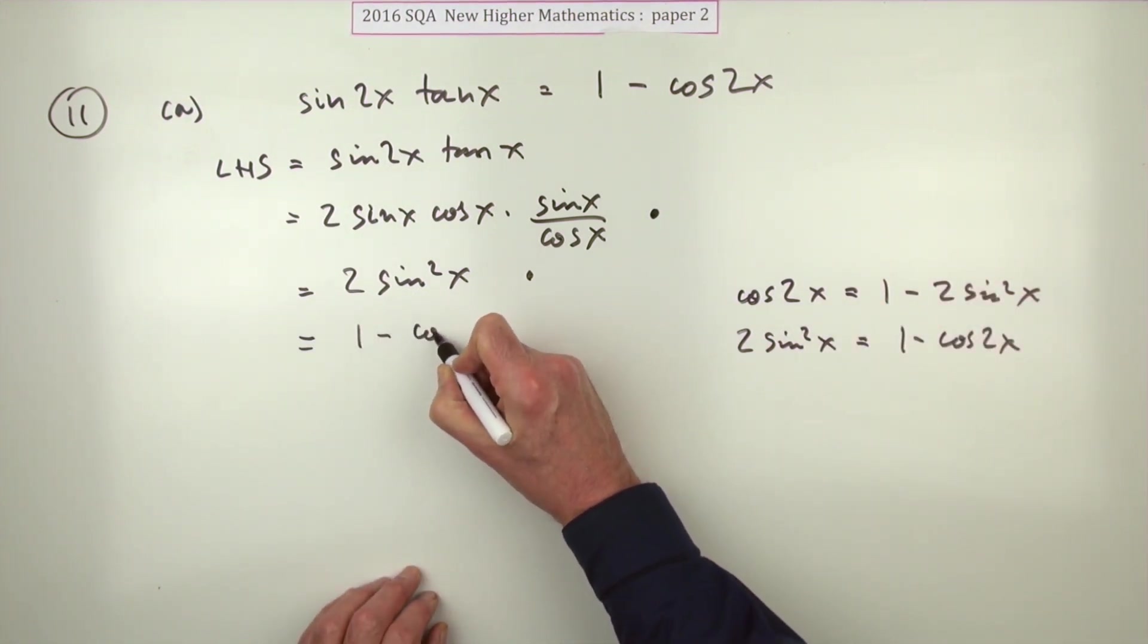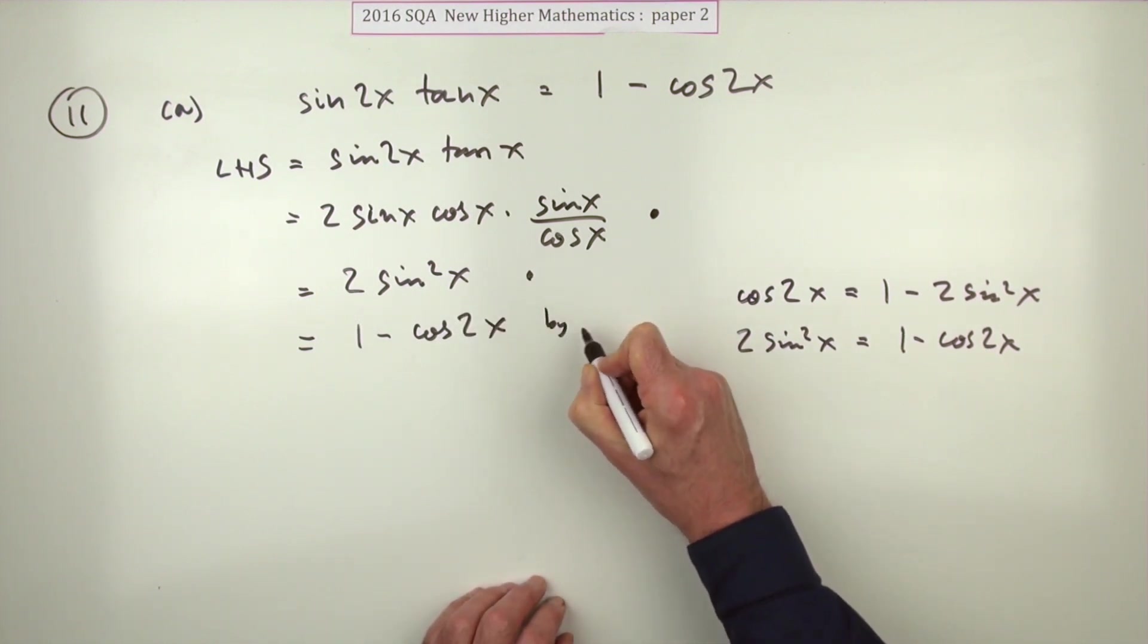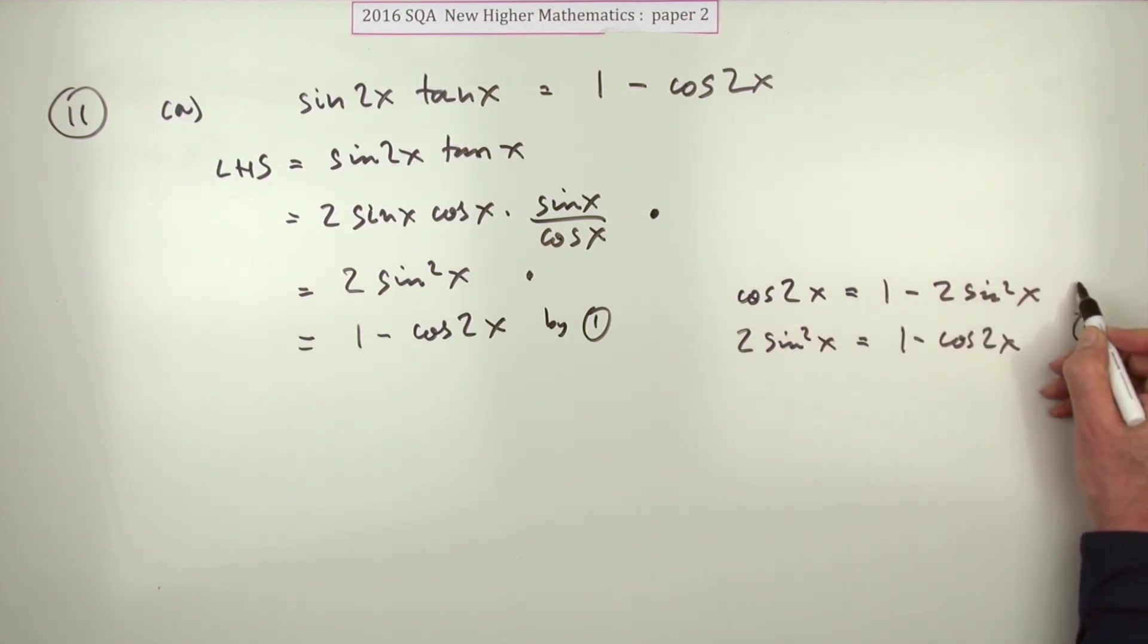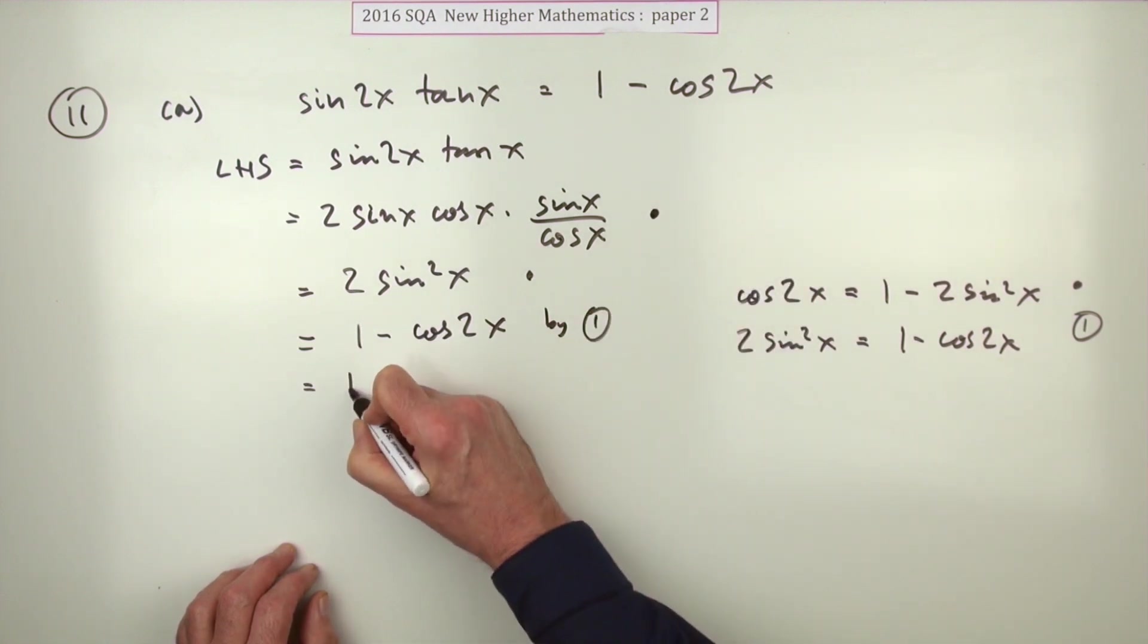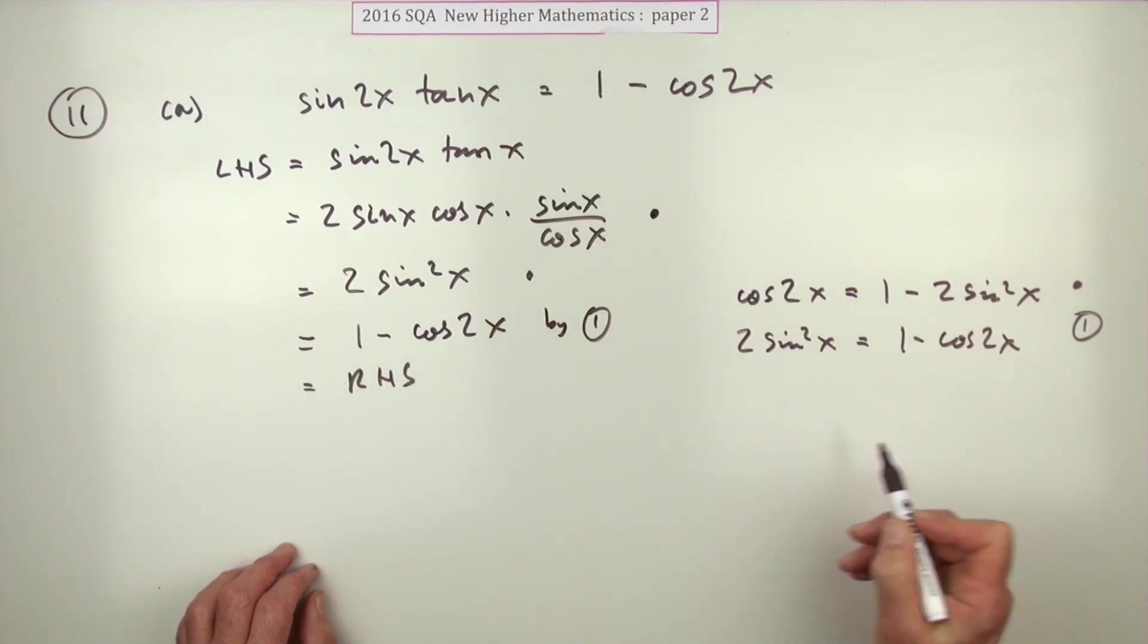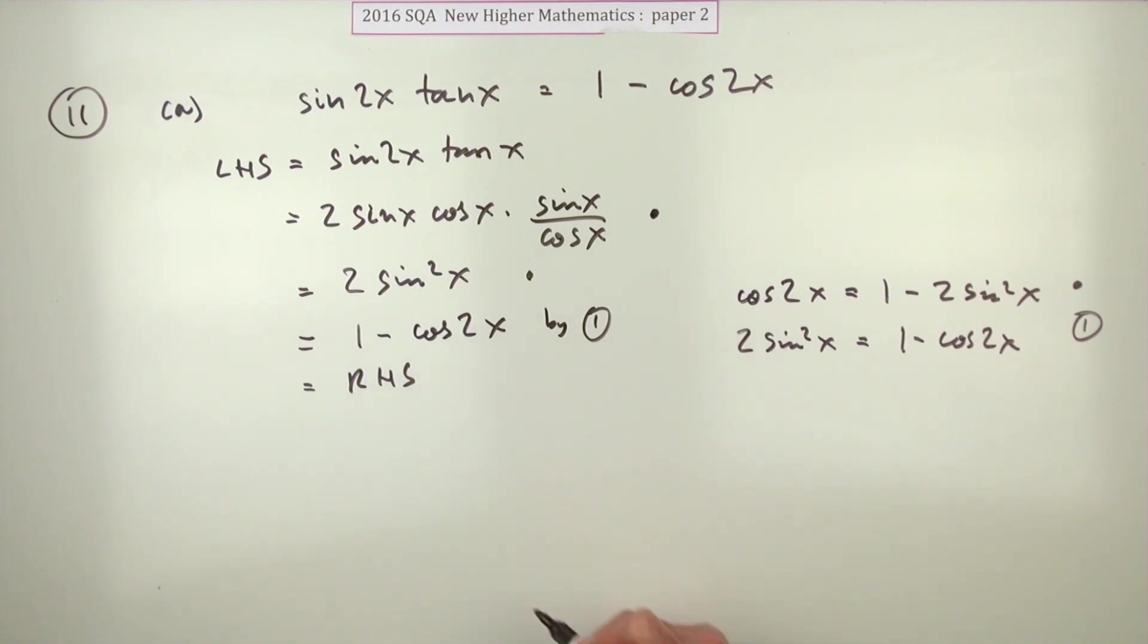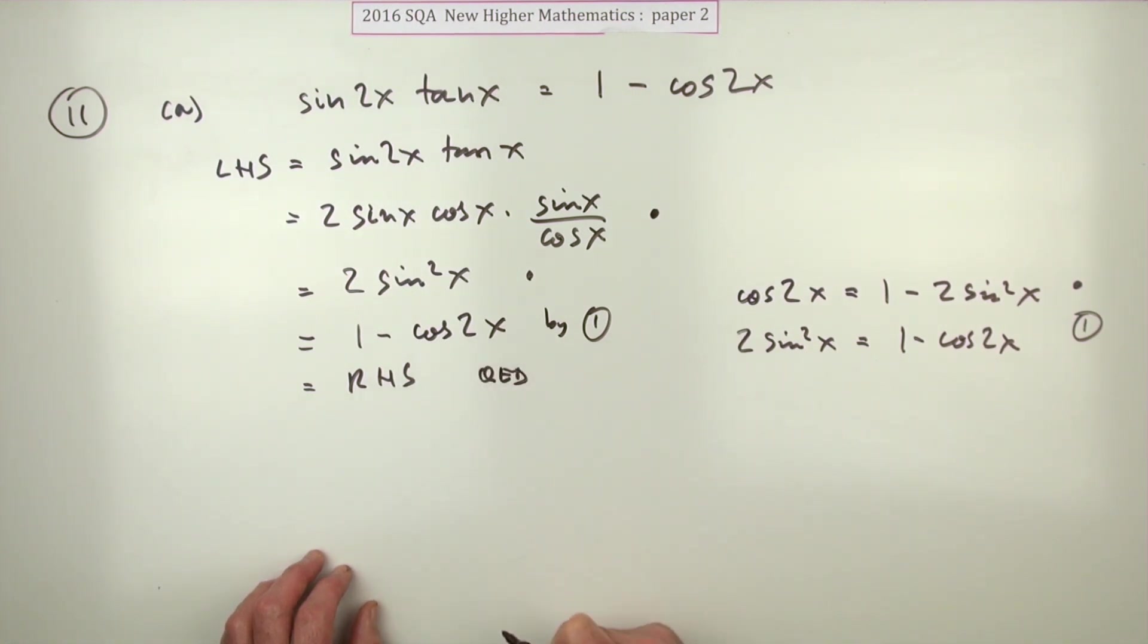You think, well I can't just throw that in because it looks as if I haven't done anything, but I have mentioned it at the side here. So I could just say it equals 1 - cos(2x) by this identity, which I'll call 1. Now using this identity gets a mark, and then that's what was required, so the final mark is for saying that's the required result. Therefore, the identity is shown, or you could put 'as required' or you could put QED, whatever you like.